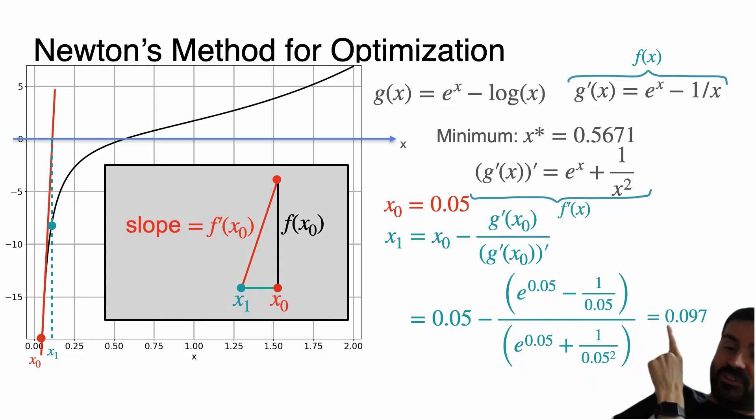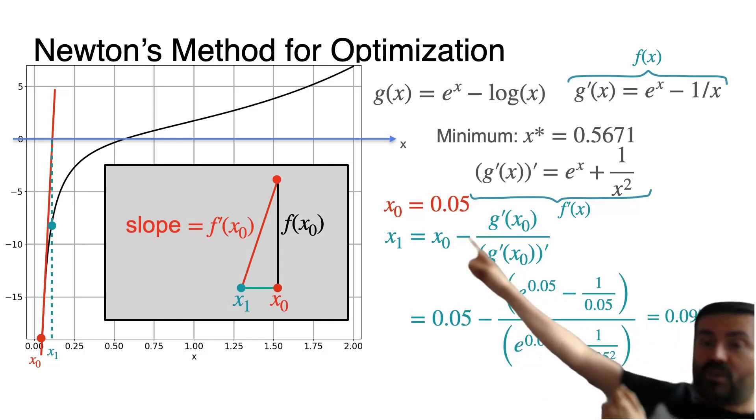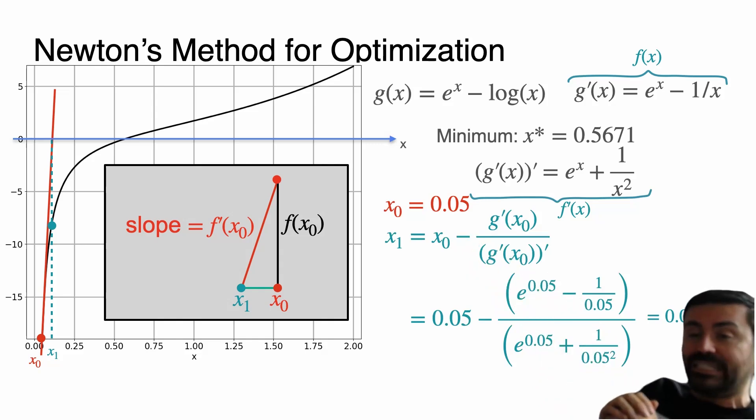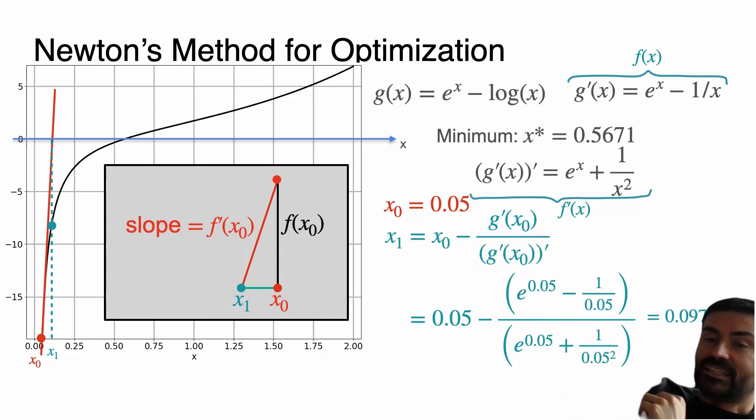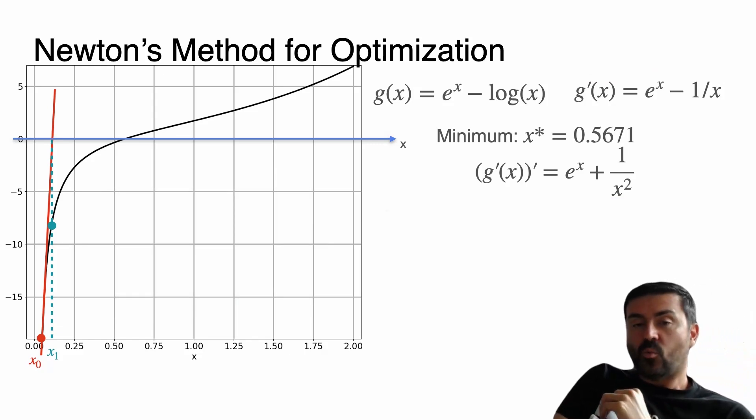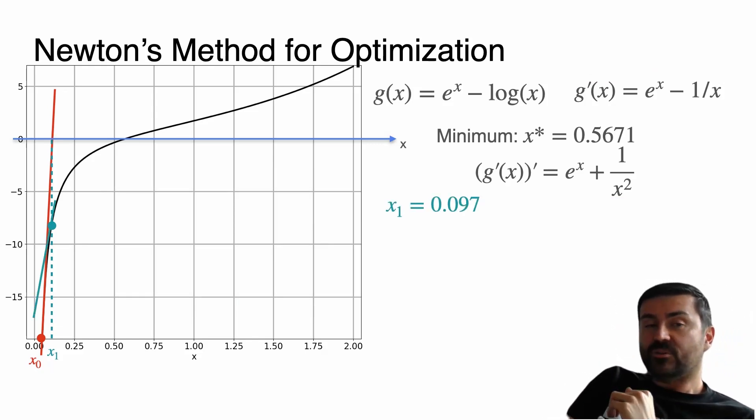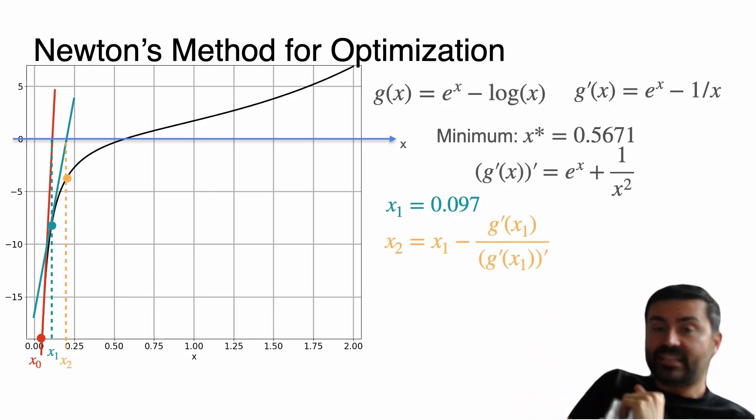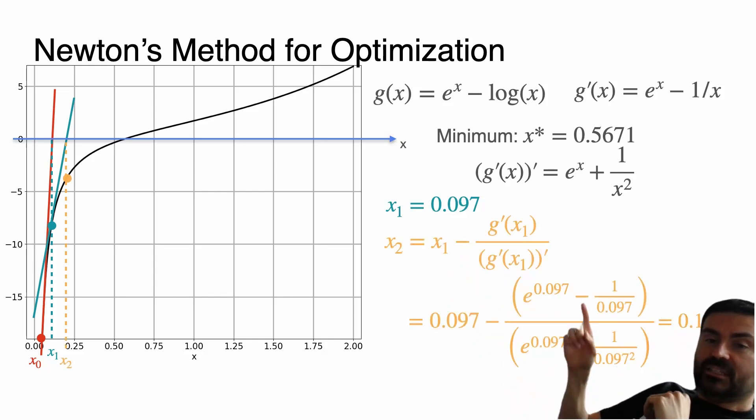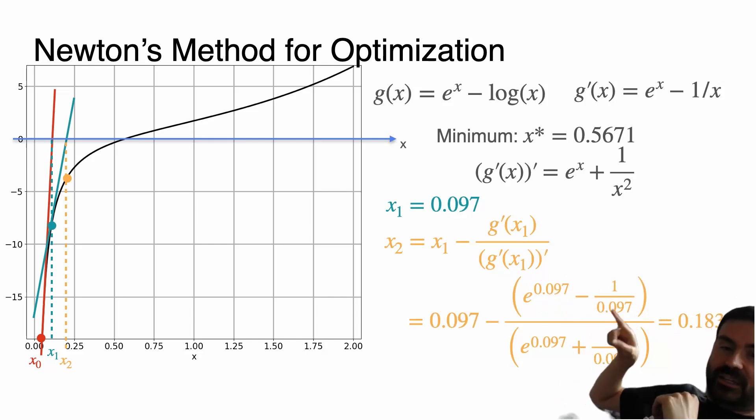So our first try was 0.05. Our second try is 0.097, and as you can see it's closer to that point of intersection between the horizontal axis and the function. So we're doing a little better. Well now let's do one more iteration. When x₁ is 0.097, then we draw the tangent over there. We see where it hits the axis at a point x₂. How do we calculate x₂? In the same way as before using the formula - we plug it in here and we get 0.183.